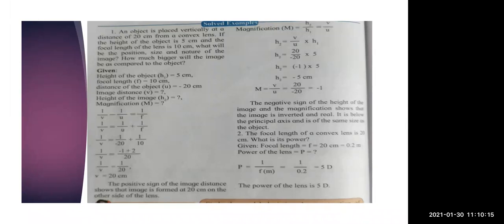With these findings we have determined the position (other side of lens), the size (same as object), and the nature of the image (real and inverted) using the lens formula and magnification formulas.